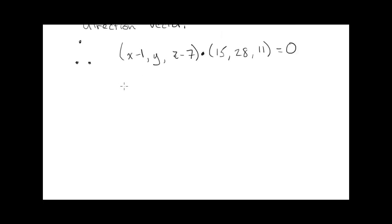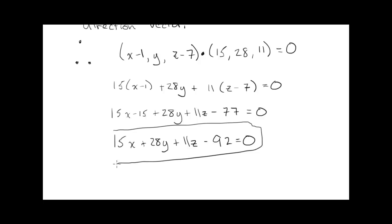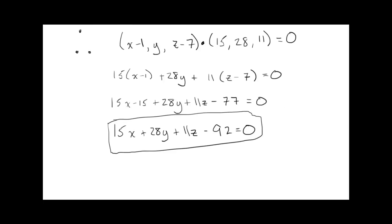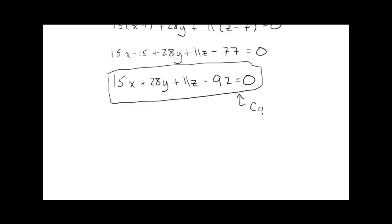Well, what happens now? So 15 times (x-1) plus 28 times y plus 11 times (z-7) equals 0. So 15x minus 15 plus 28y plus 11z minus 77 equals 0. 15x plus 28y plus 11z minus 92 equals 0. Hey, look at that. That looks like what we thought the scalar or Cartesian equation would look like. So this is the Cartesian equation of the plane.